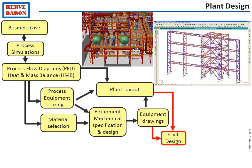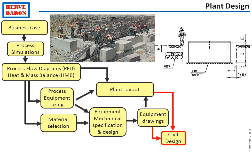The finalization of the plant layout and information from equipment vendors — such as equipment dimensions and weights — allow to perform the design of the process structures, whether they are made of concrete or steel. The information from vendors also allows to design the equipment foundations.